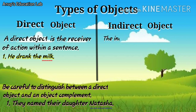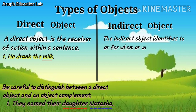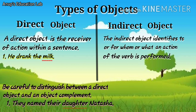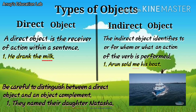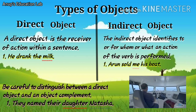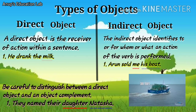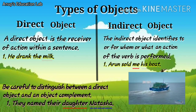The indirect object identifies to or for whom or what the action of the verb is performed. Let us see an example. Arun sold me his boat. Here, me is indirect object, whereas his boat is direct object.